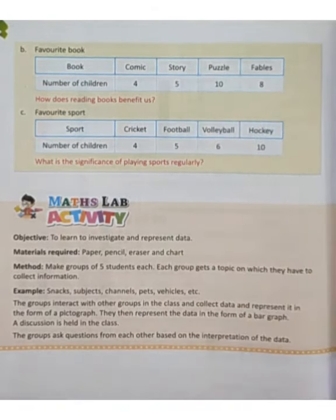Let's start Part B. We have the data here — the name of books and the number of children. In this bar graph, the number of children is on one axis and the books on the other. We will draw a bar for comic up to 4.